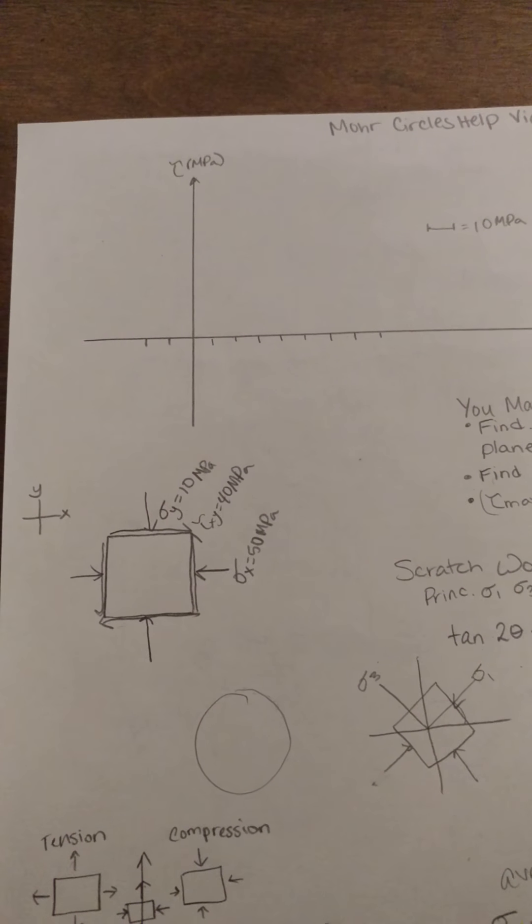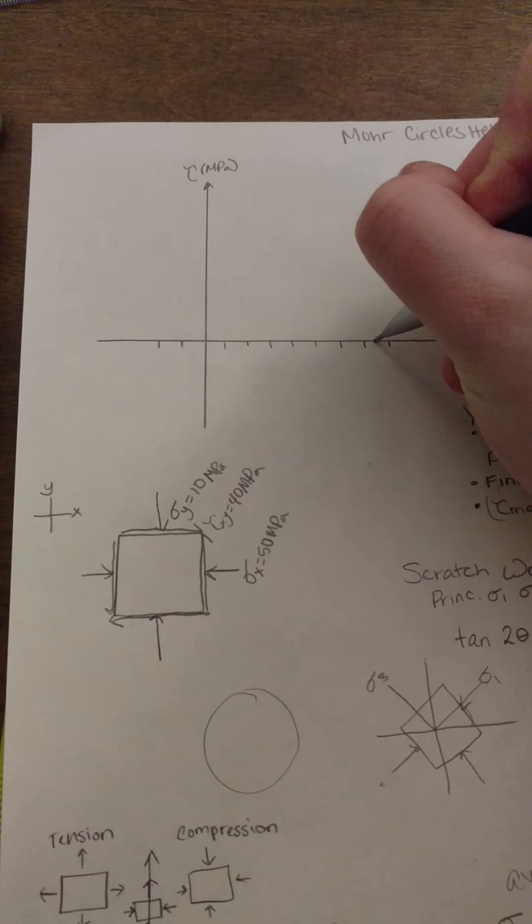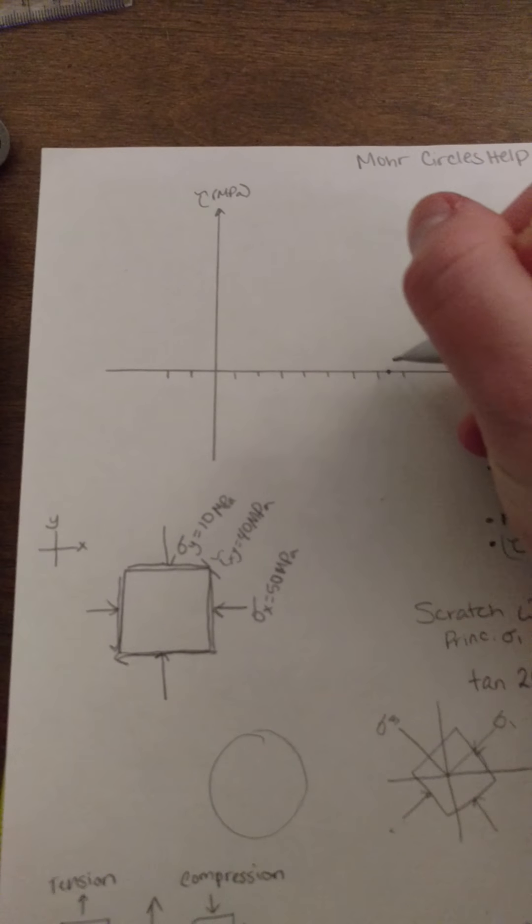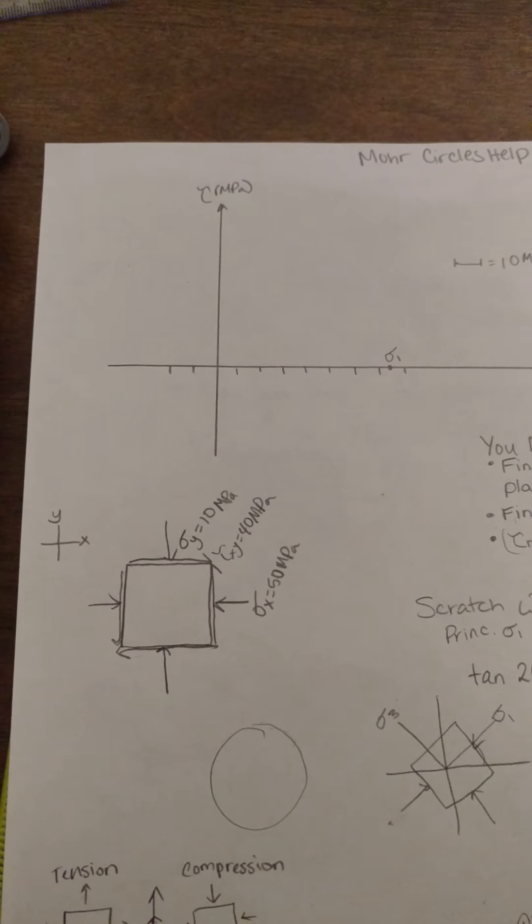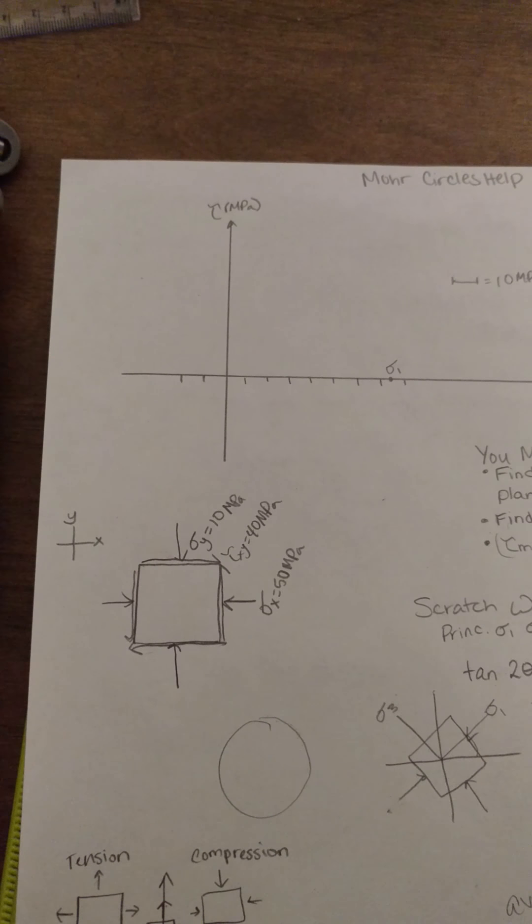So we know that our sigma 1 was 74.72. So I'll come out here and say it's going to plot about right there, and I'll label that sigma 1. And I know that sigma 3 was negative 14.72. That's going to plot about right here, and I'll label that sigma 3.